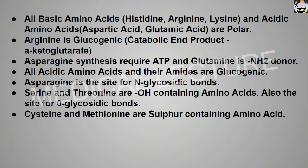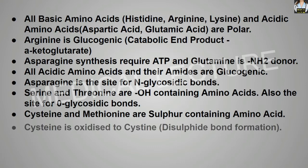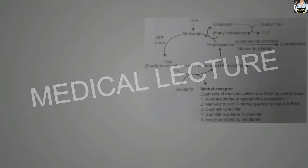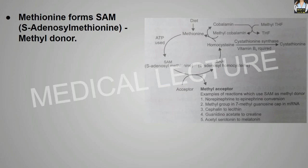Cysteine and methionine are sulfur-containing amino acids. Cysteine is oxidized to cystine via disulfide bond formation. Methionine forms S-adenosylmethionine, which acts as a methyl donor. SAM is actually a methyl donor.